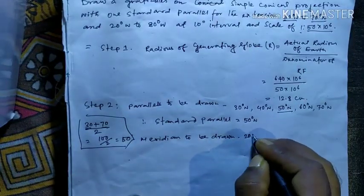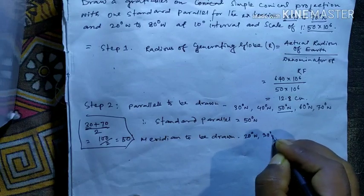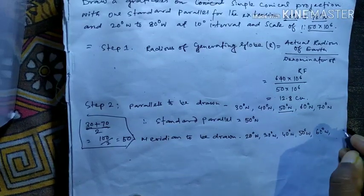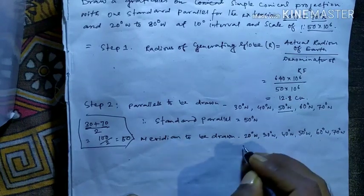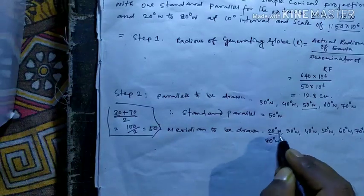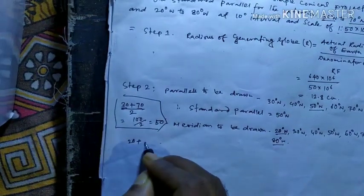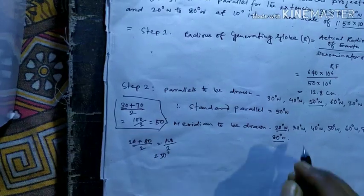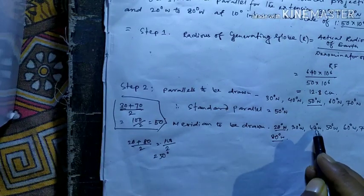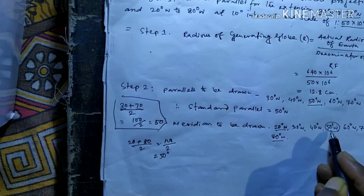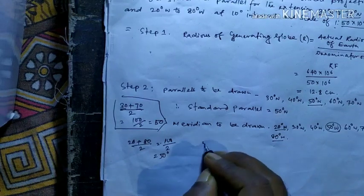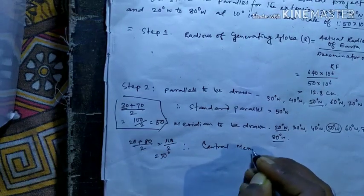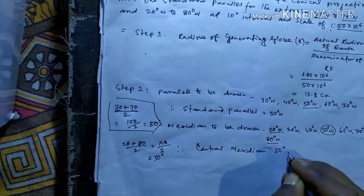Meridians: 40 degree West, 50, 60 degree West, 70 degree West, 80 degree West. It was same — first and last: 20 plus 80 by 2 equals 100 to 50 degree. So the central meridian is 50 degrees. Count 1-2-3 on each side — that gives 50 degrees. Central meridian: 50 degree West.